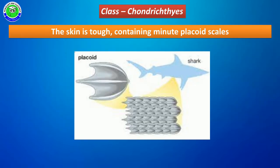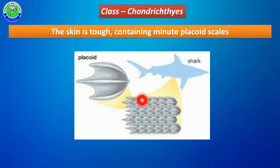Another important characteristic feature of Chondrichthyes members: the body surface consists of tight skin, and on the surface of this tight skin there are very minute placoid scales. The presence of minute placoid scales is another important character of Chondrichthyes members.